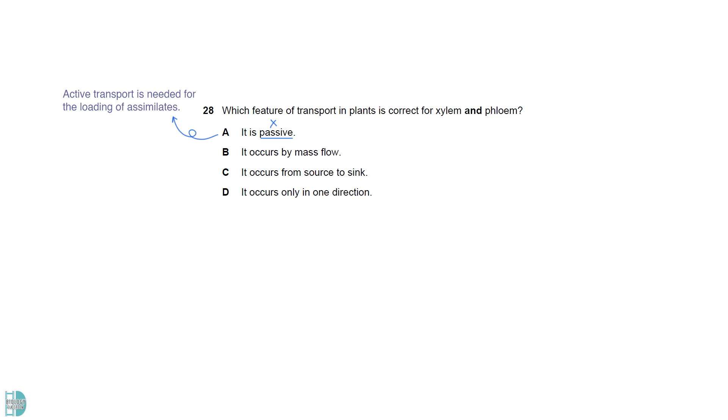A is wrong because active transport is needed for the loading of assimilates. B is correct. Mass flow is the movement of fluid down a pressure gradient, which occurs in both tissues. C is only true for phloem. D is only true for xylem, as phloem can transport assimilates in different directions.